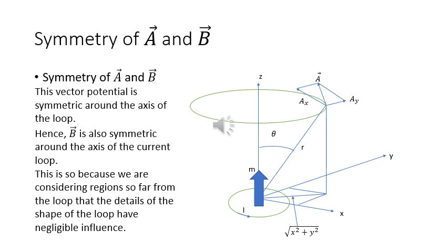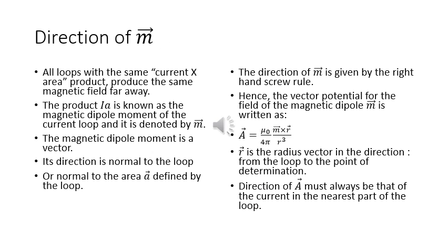This vector potential is symmetric around the axis of the loop. Hence, B is also symmetric around the axis of the current loop. This is because we are considering regions so far from the loop that the details of the shape have negligible influence. All loops with the same current-times-area product produce the same magnetic field far away.